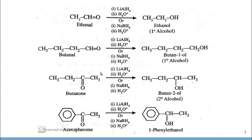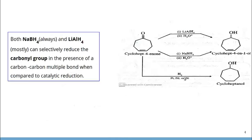Here we have two ketone examples. Butanone on reduction with LiAlH4 followed by water, or with Sodium Borohydride followed by water, gives butanol — the ketonic group on reduction gives a secondary alcohol group. Similarly, acetophenone: the C=O group on reduction gives 1-phenylethan-1-ol, which is a secondary alcohol.